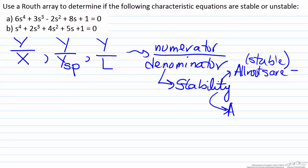On the other hand, if at least one root is positive, that means that the denominator, that the process is unstable.